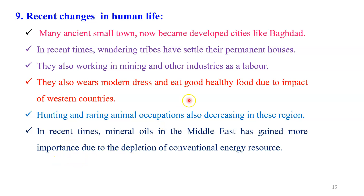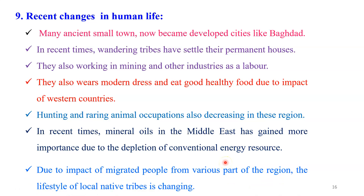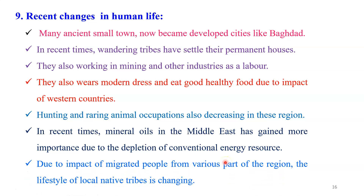The hunting and animal rearing occupations are also decreasing in this region, because these people now shift as labor in various secondary and tertiary activities in some parts of or near the desert region. In recent times, life in the Middle East has gained more importance due to the discovery of conventional energy sources. Therefore in that area, human life and human settlements are increasing day by day due to the impact of migrated people from various parts of the region. The lifestyle of the local native tribes is changing very rapidly.